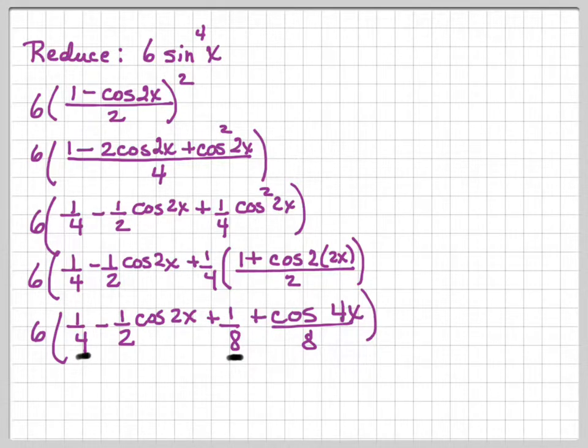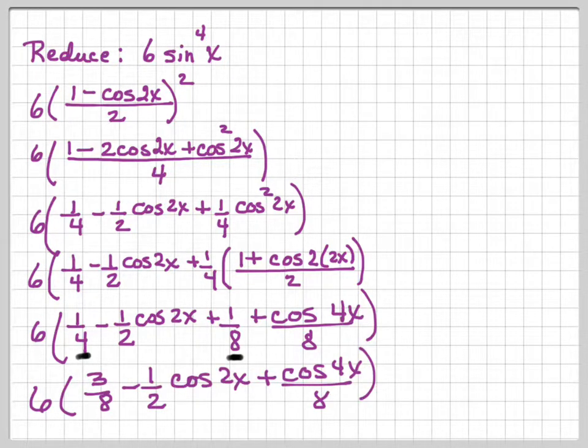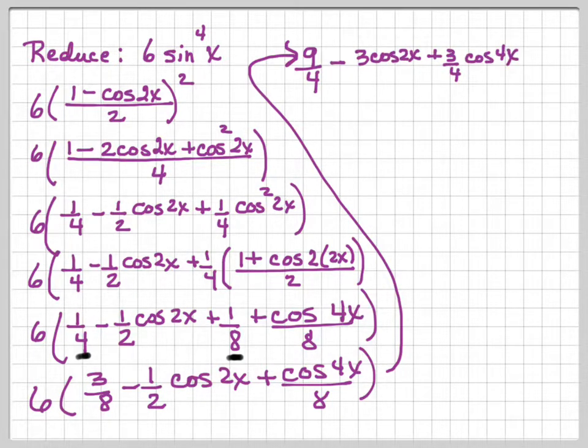I can put these two numbers together, since I can collect like terms. So this is going to be 6 times 3 eighths minus 1 half cosine 2x plus cosine 4x over 8. And then when I go ahead and distribute my 6, I get 9 over 4 minus 3 cosine 2x plus 3 fourths cosine 4x, and that is my final answer.